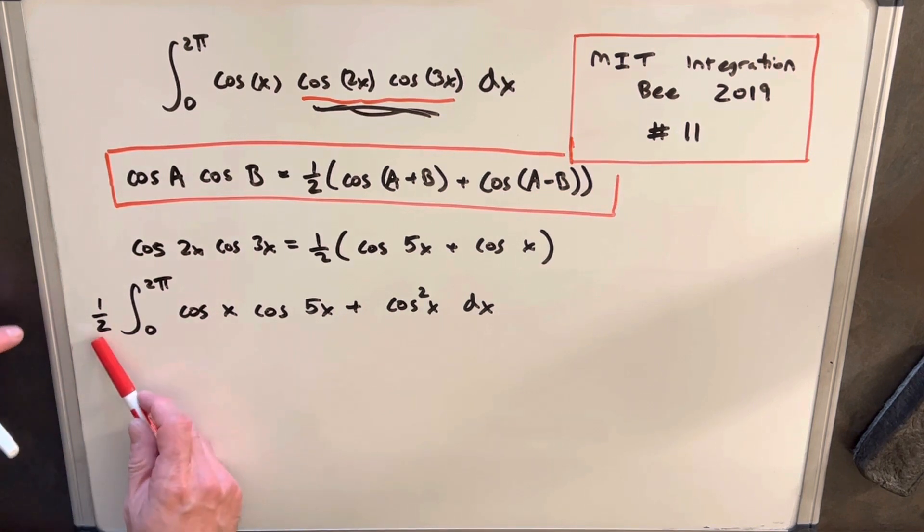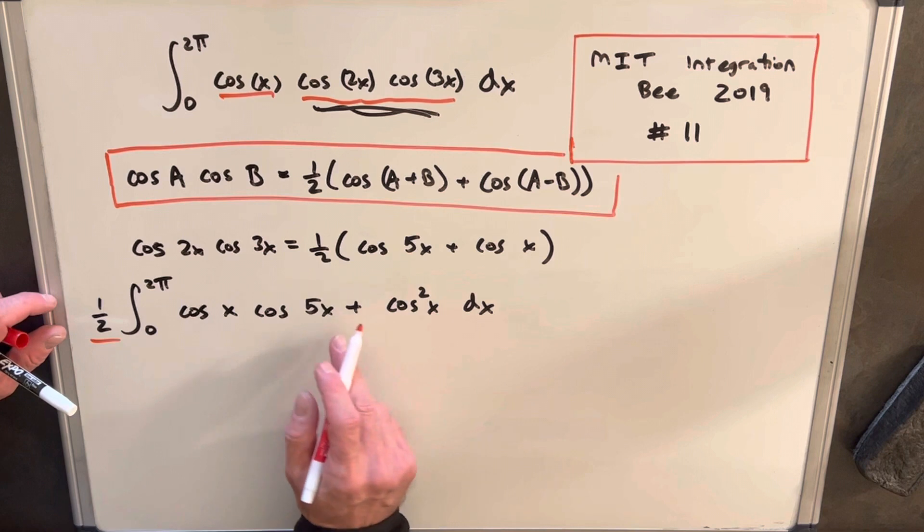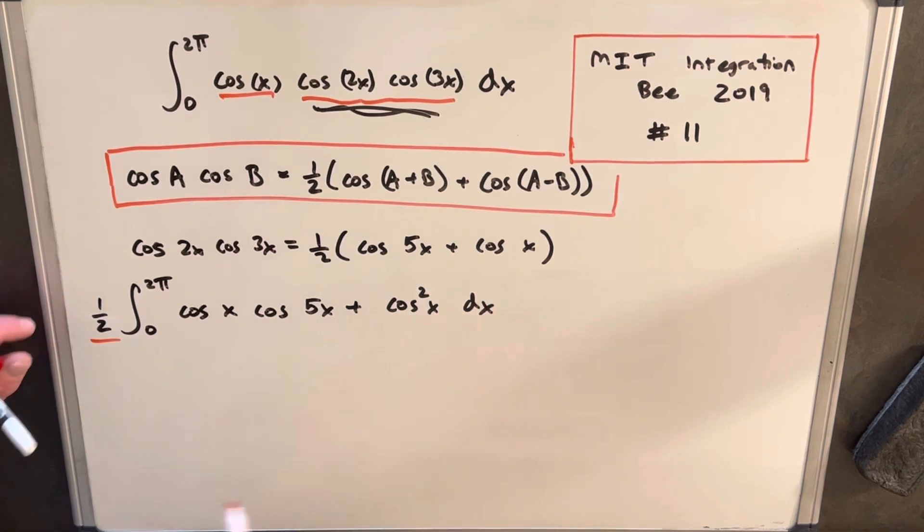I've rewritten this. I've just pulled the half out front of the integral, and I've distributed this cosine into the cos 5x and cos x to get a cos squared x here.